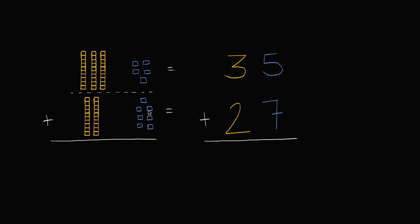So let's start in the ones place right over here. So I have five ones here, and I have seven ones here. So if I add five ones to seven ones, how many ones am I going to get? I'm going to get 12 ones — one, two, three, four, five, six, seven, eight, nine, ten, eleven, and twelve. Now you might notice a problem here, because if I take five plus seven, I can't write the number twelve in just the ones place. I just need to have one digit — I can't have two digits there.